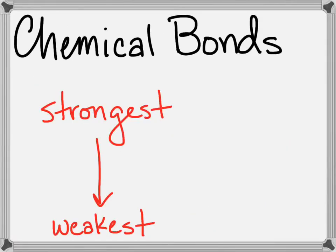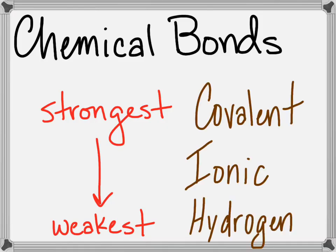There are three types of chemical bonds we're going to discuss. In order of strength, they are covalent, then ionic, then hydrogen.